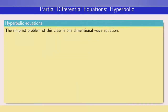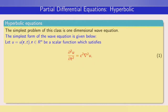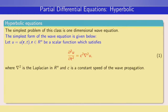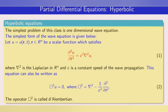Hyperbolic partial differential equations — the simplest problem of this class is the one-dimensional wave equation. Let u equal u(r, t), where r is a vector in R^n, the n-dimensional real space, and u is a scalar function satisfying: d²u/dt² = c² ∇²u. Here ∇² is the Laplacian (space differential operator), t is the time variable, and c is a constant representing the speed of wave propagation. This equation can also be written as □²u = 0, where □² = ∇² − (1/c²)(∂²/∂t²). This operator is known as the D'Alembertian operator.